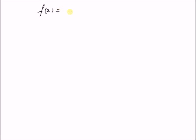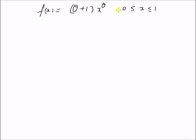Given the following distribution, f of x is equal to theta plus 1 multiplied by x power theta, where x is between 0 and 1. Here x is the random variable and theta is the parameter. The probability density function is 0 elsewhere.